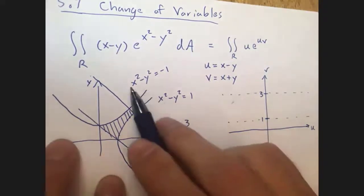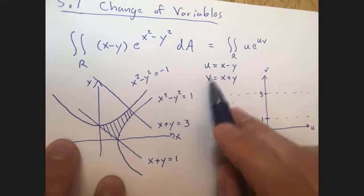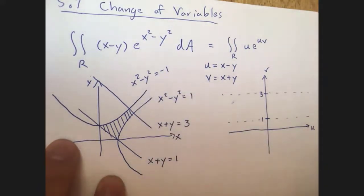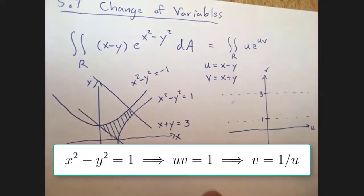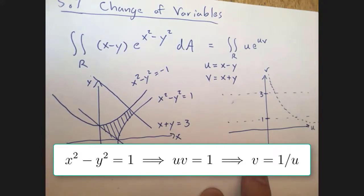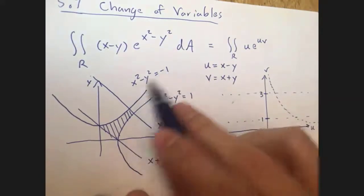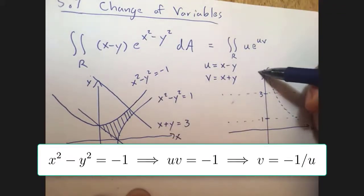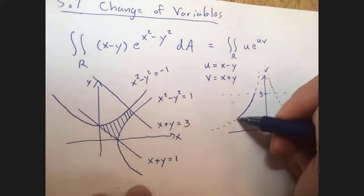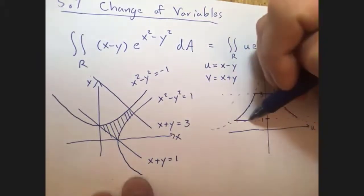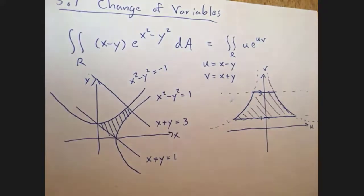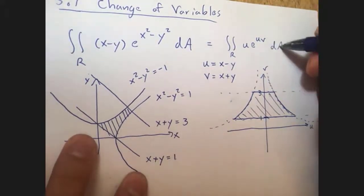The hyperbolas are a bit more complex to transform. x squared minus y squared equals uv, so the curve uv equals 1 becomes v equals 1 over u, and the curve uv equals negative 1 becomes v equals negative 1 over u. So in the uv plane we have this region in here, which isn't a rectangle but is a lot nicer than what we started with.